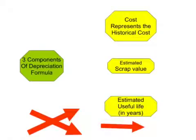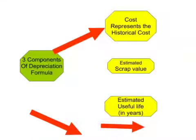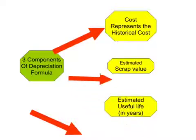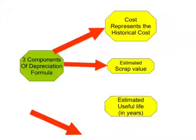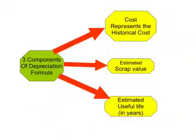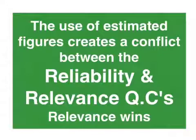In terms of the actual formula for depreciation, we have two items on our numerator: the cost — evidenced by a cheque butt or invoice — minus the estimated scrap or residual value, to work out how much is actually going to be allocated over its useful life. Our denominator is the useful life in years, which is an estimation of how long we think we'll retain the asset. Because we're using estimated figures, we are in fact breaching the reliability qualitative characteristic, as there is potential to be biased in our estimations of useful life or residual value, meaning our reports could be prone to error in terms of the total expense allocated and the carrying value reported in the balance sheet.